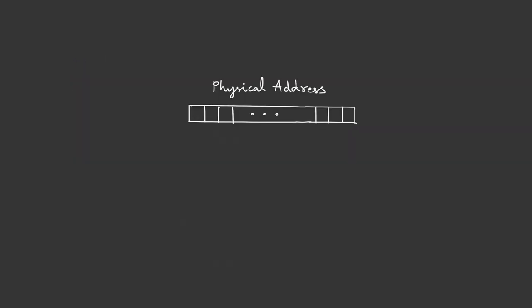Let's generalize this: when we have a physical address, the least significant bits always refer to the block offset and the rest of the bits are the block index. The number of bits for the block offset depends on block size, and the number of bits for the block index depends on the number of blocks.